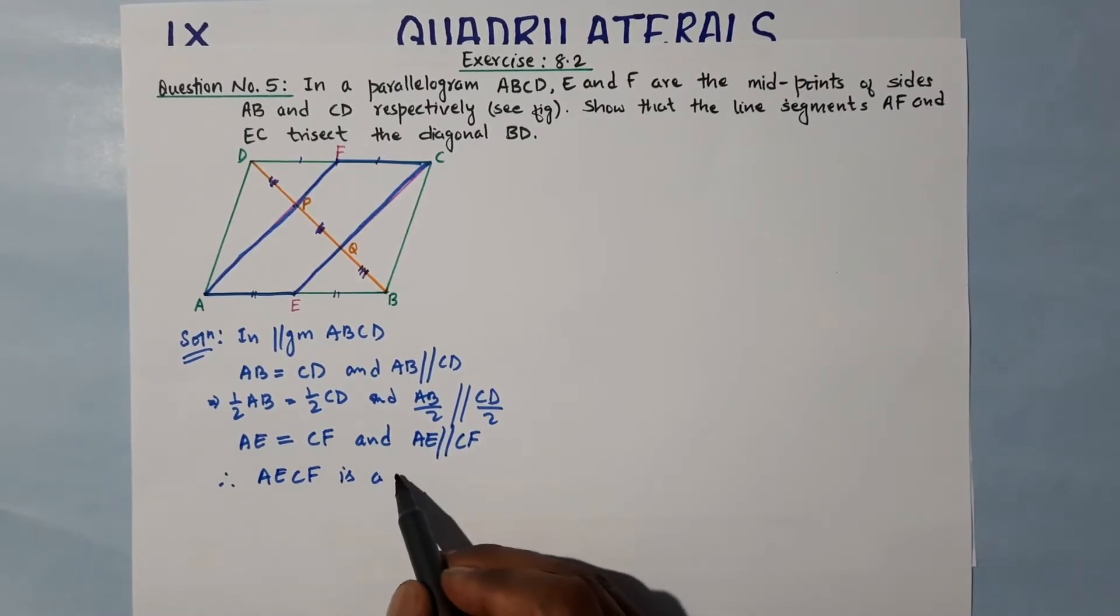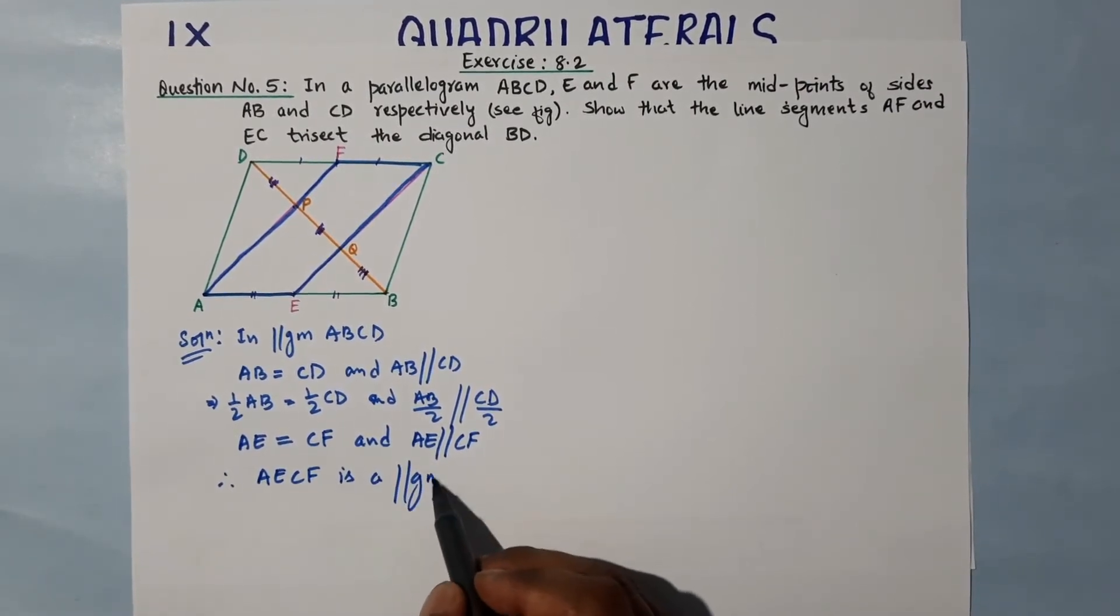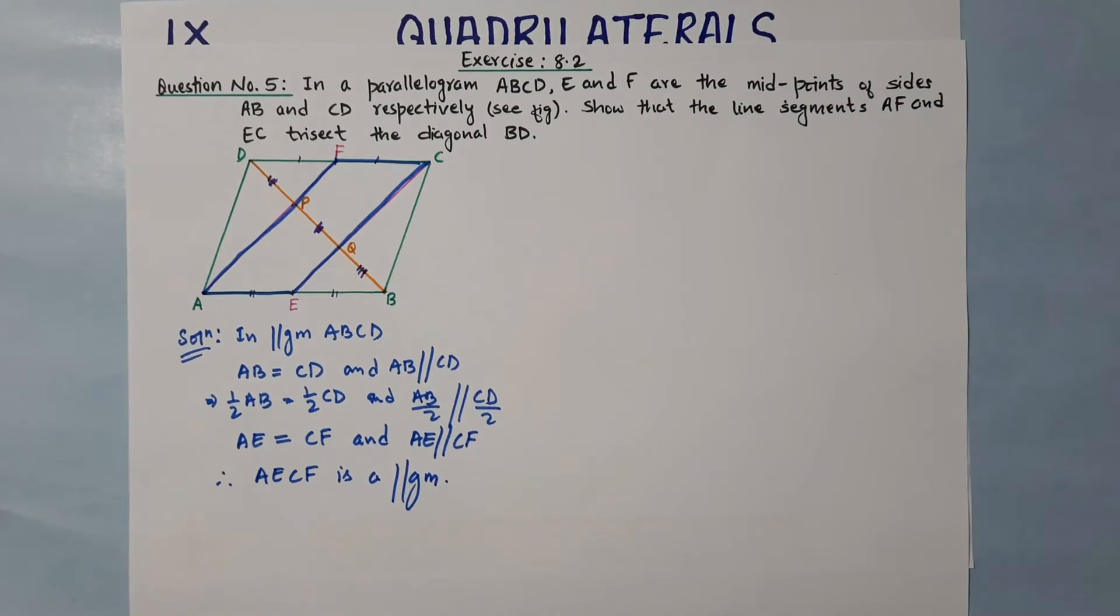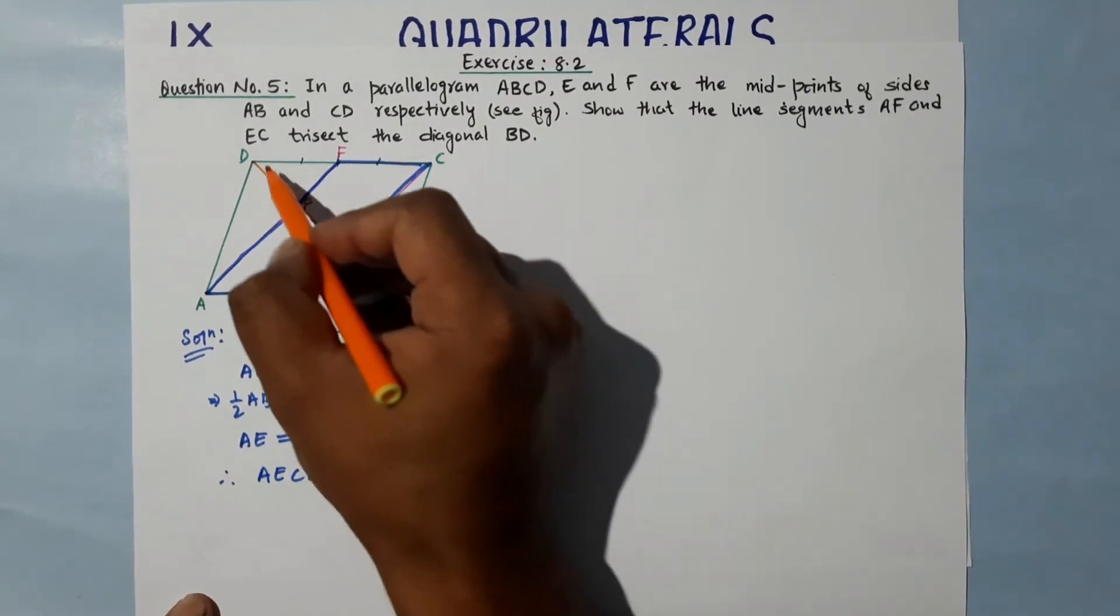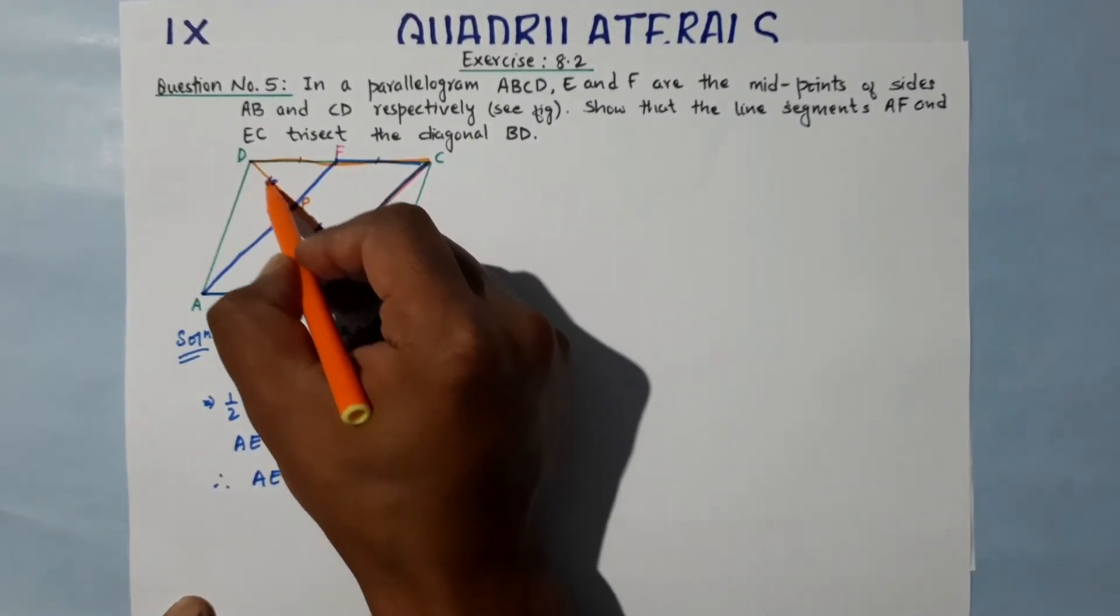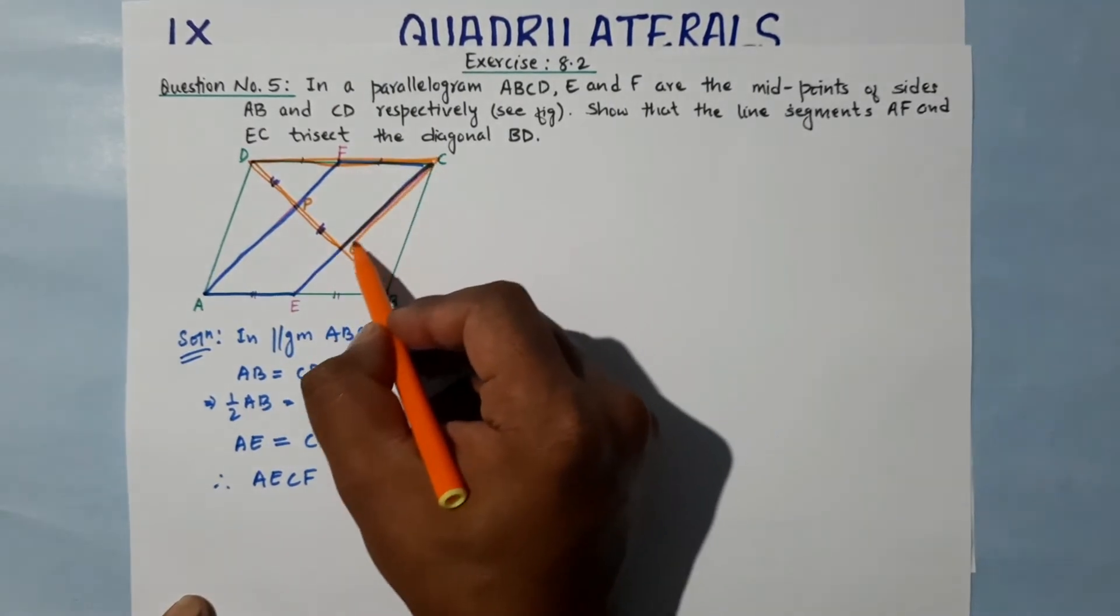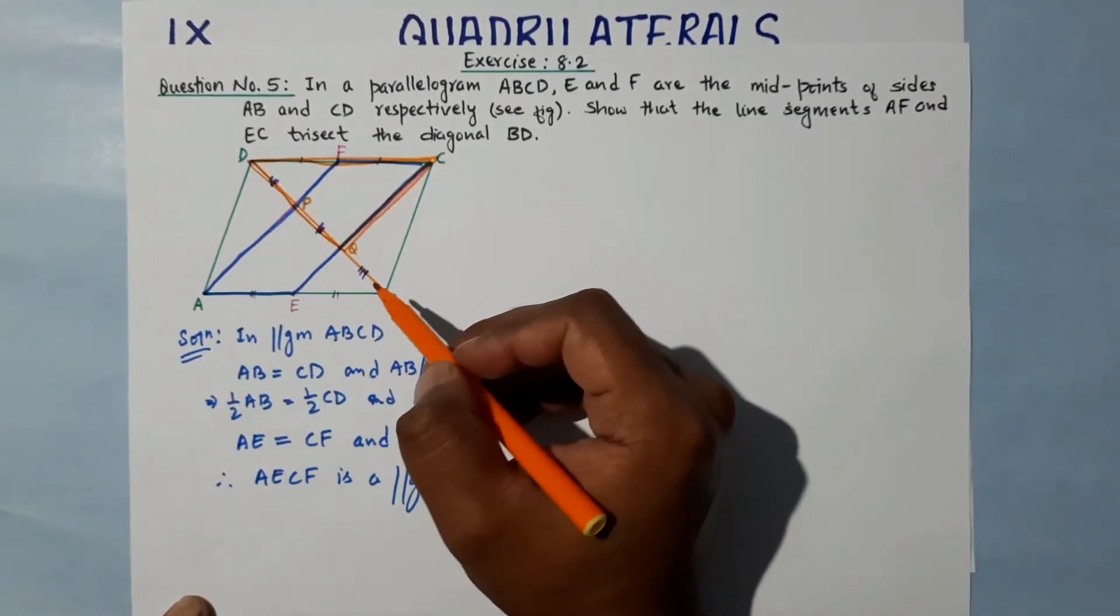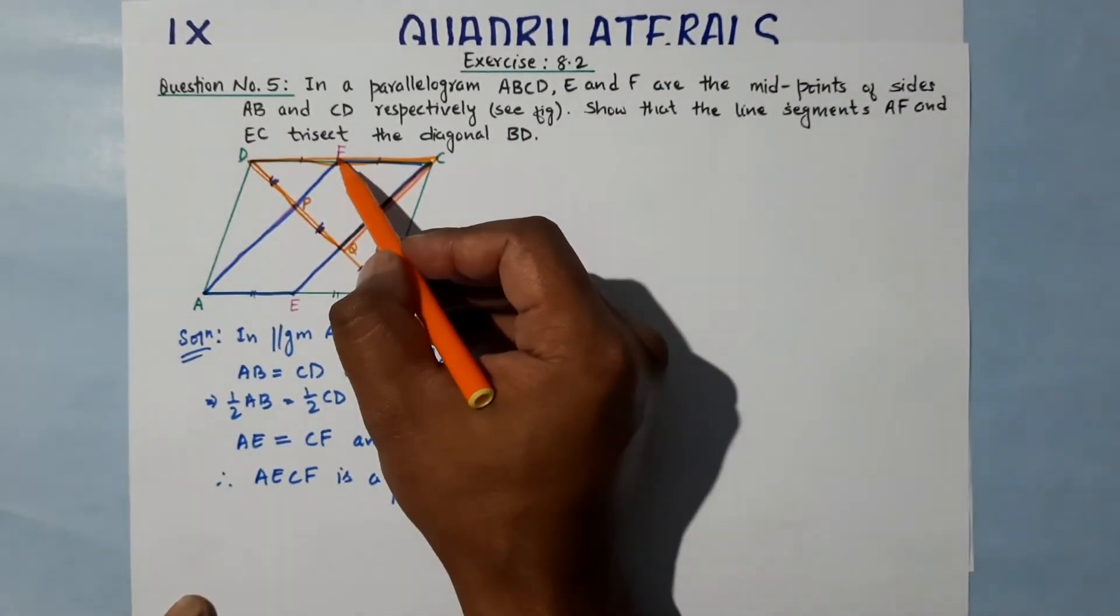Therefore, AECF is a parallelogram. We first showed it is a parallelogram. Now that we showed it's a parallelogram, we can solve by triangles. First let's take this triangle...